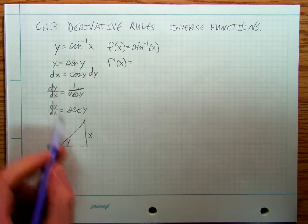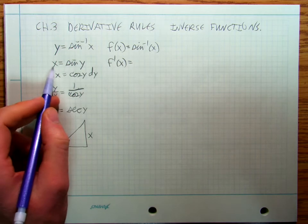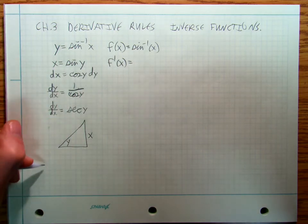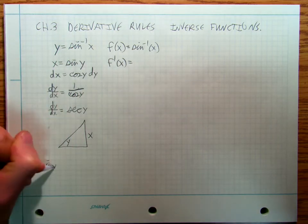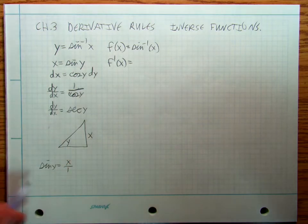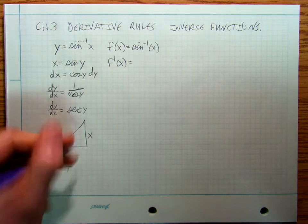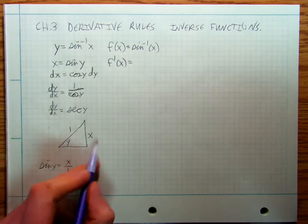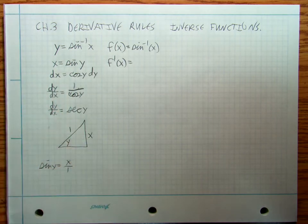Well, what's my hypotenuse? I don't see a fraction here. I just have an x. Well, I can write it as sine y equals x over 1. So I've got opposite over hypotenuse. x over 1 is x equals sine y.